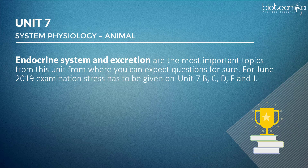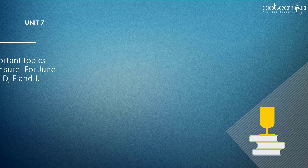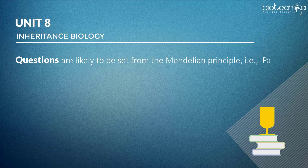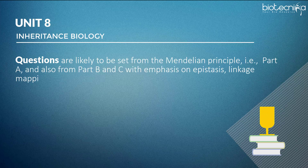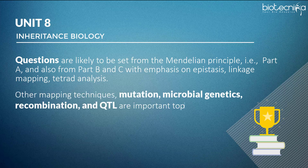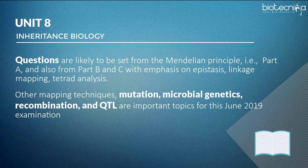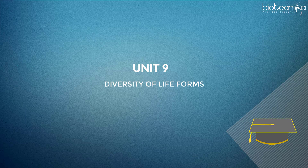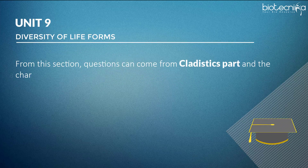For the 2019 examination, stress has to be given on Unit 7 subunits B, C, D, F, and J. Unit 8 — Inheritance Biology: Questions are likely to be set from the Mendelian principles (Part A) and also from Parts B and C, with emphasis on epistasis, linkage mapping, tetrad analysis, other mapping techniques, mutation, microbial genetics, recombination, and QTL.